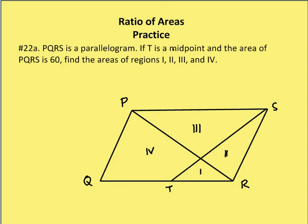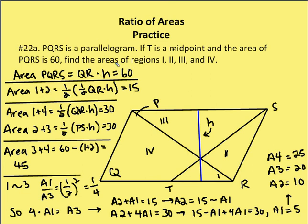Last problem. PQRS is a parallelogram. T is a midpoint and the area of PQRS is 60. We're going to find the areas of regions one, two, three, and four. Both parts A and B are fairly tough problems, so follow along carefully. The area of the parallelogram PQRS equals QR times H, which is 60. The area of one plus two — since TR is half of QR — is one half base times height, or one half of one half QR times H. Since QR times H is 60, one half of one half of 60 is one fourth of 60, which is 15.